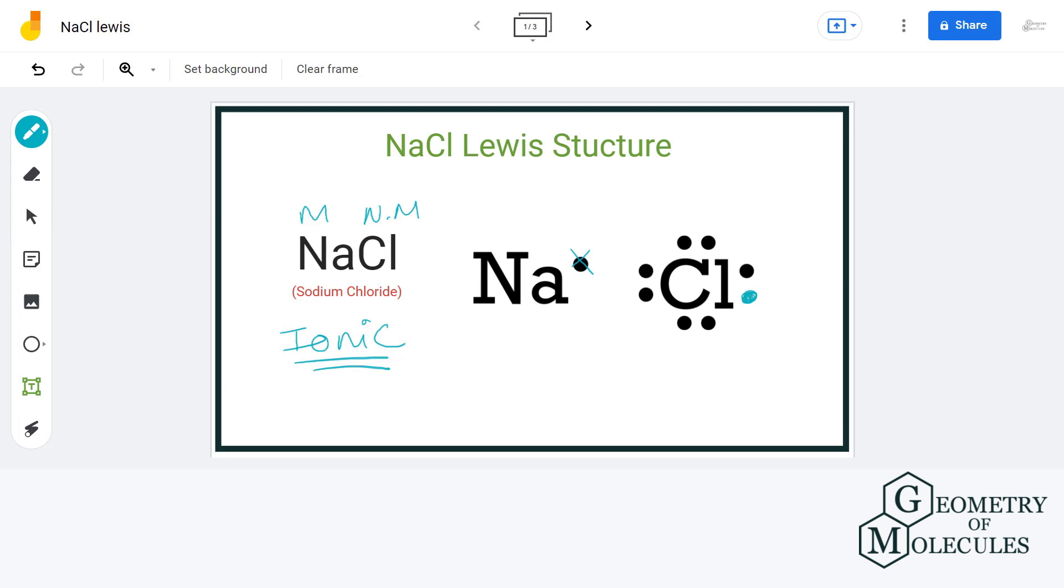In this case, the non-metal is chlorine, which has seven valence electrons in its outer shell. The chlorine atom will gain one electron from sodium.